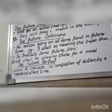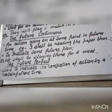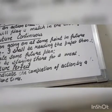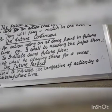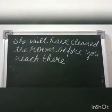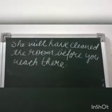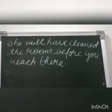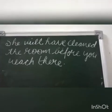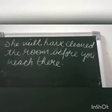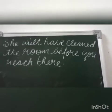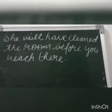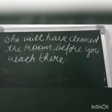Future Perfect Tense: the future perfect is used to indicate the completion of an action by a certain future time. Two actions will take place here. For example, 'She will have cleaned the room before you reach there.' The first action is 'she will have cleaned the room' in future perfect tense, and the second action 'before you reach there' uses the present indefinite tense.